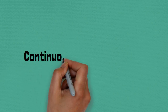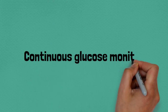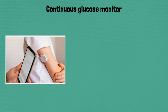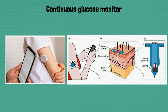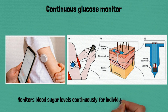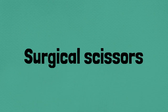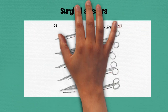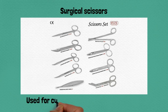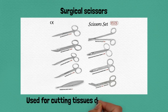Seventy-eight: continuous glucose monitor, monitors blood sugar levels continuously for individuals with diabetes. Seventy-nine: surgical scissors, used for cutting tissues during surgery.